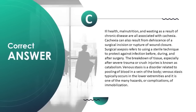Cachexia is associated with ill health, malnutrition, and wasting from chronic disease, and can also result from dehiscence of a surgical incision. Surgical asepsis refers to using sterile technique to protect against infection before, during, and after surgery. The breakdown of tissue especially after severe trauma is known as catabolism. Venous stasis is pooling of blood in a vein, typically in the lower extremities, and is a complication of immobilization.